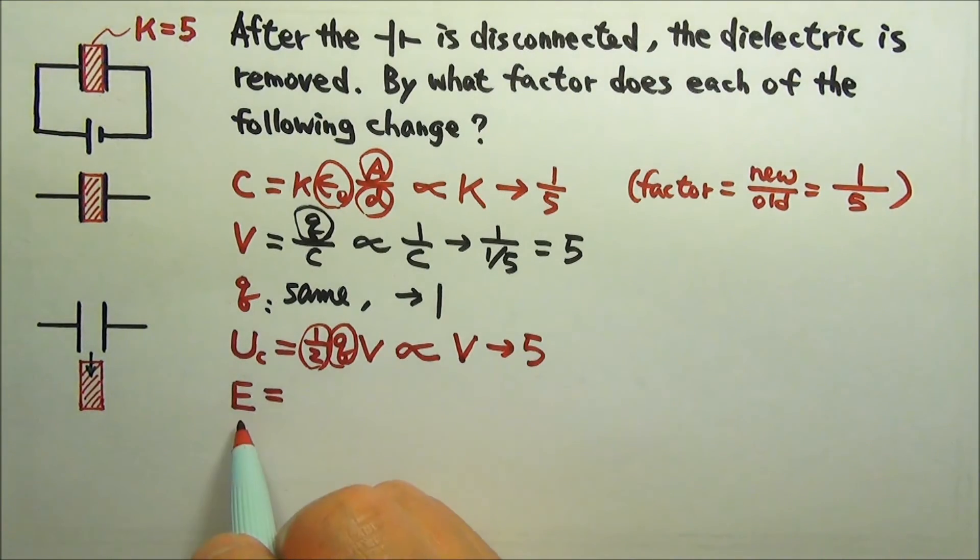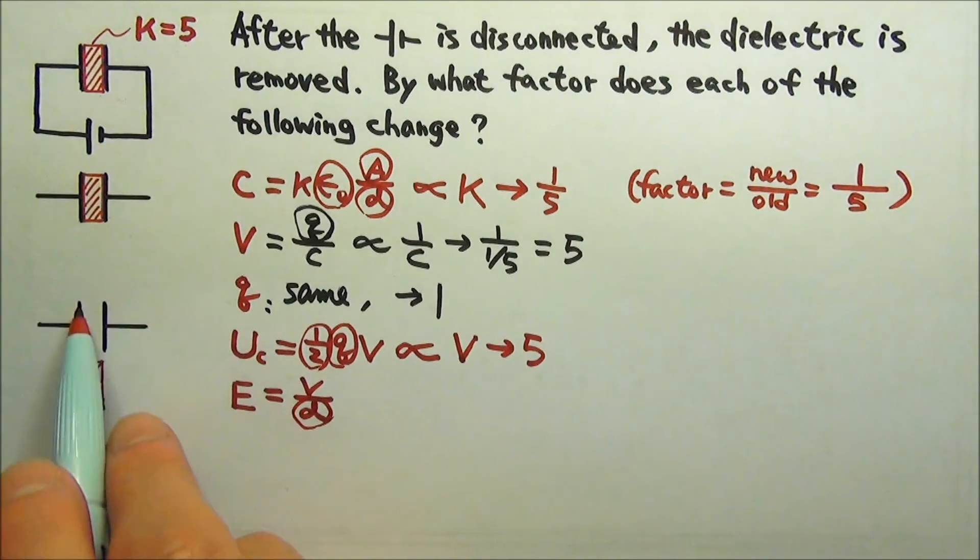V equals ed, so e equals v over d. The plate separation d stays the same.